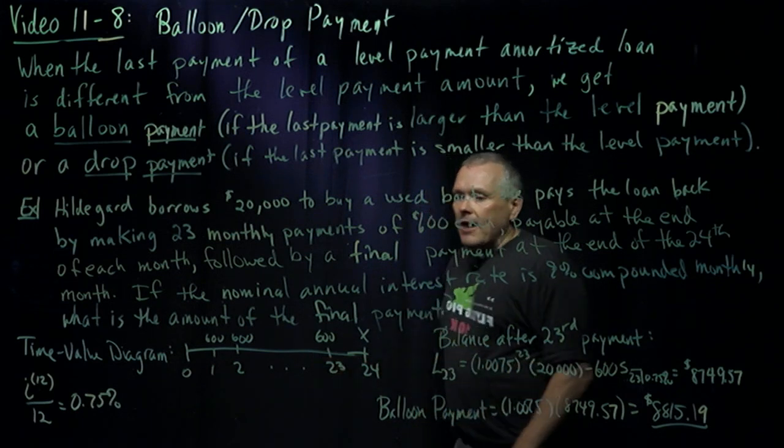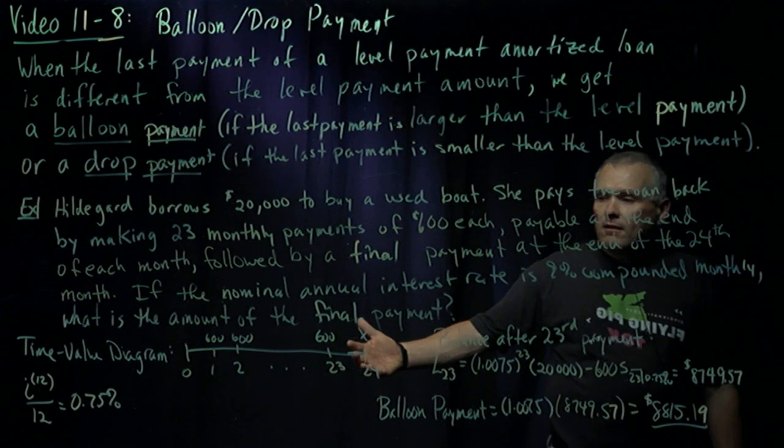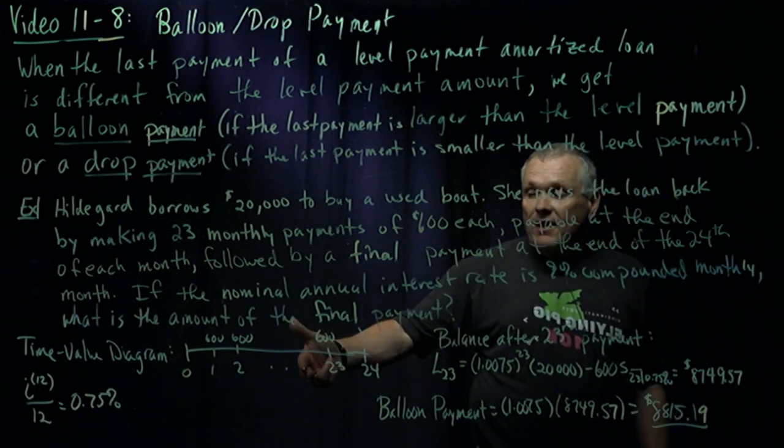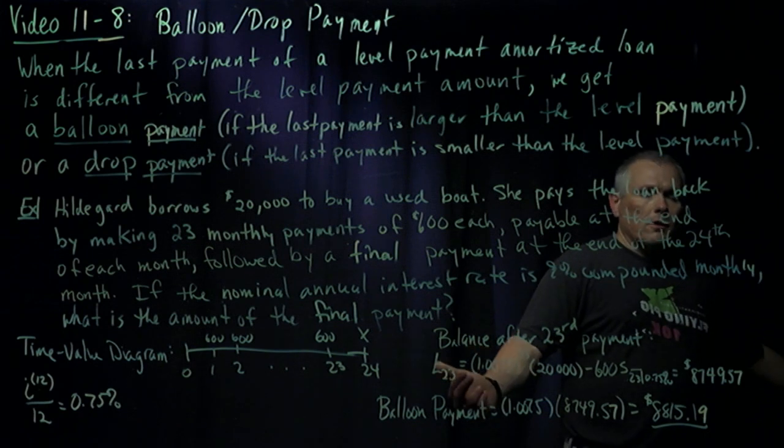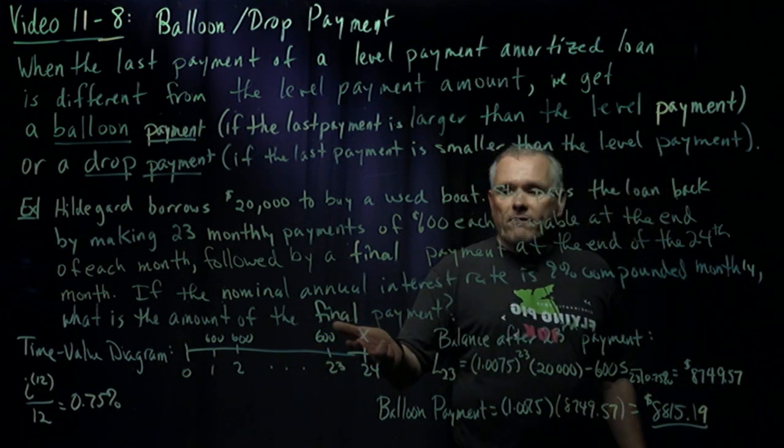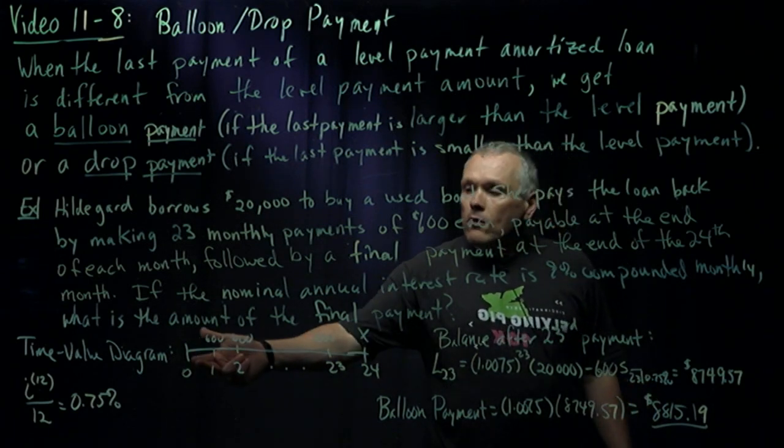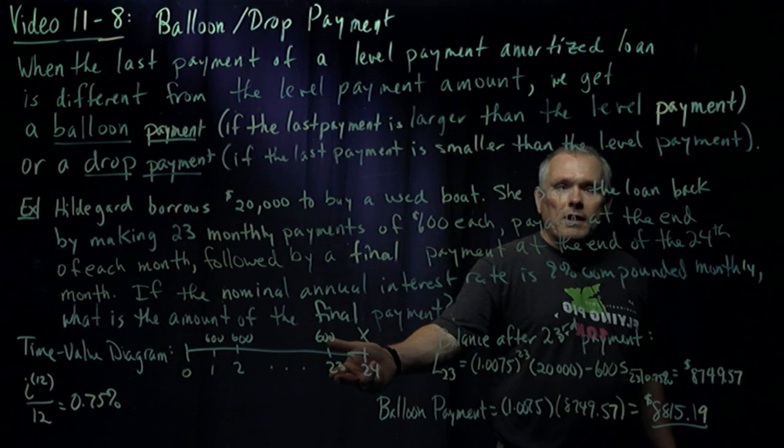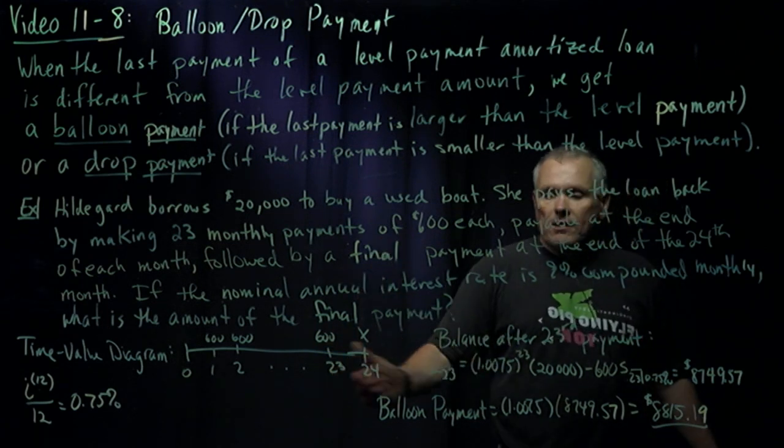To figure out the balance at time 23, remember we've got two methods for figuring out balance at time 23, or at a given time. But the prospective method is looking forward. I can't figure it out by looking forward in this case because I don't know what the final payment's supposed to be, and that's the only thing that happens past time 23. So to figure out the balance at time 23 here, we're going to have to use the retrospective method. We don't have any other choice.